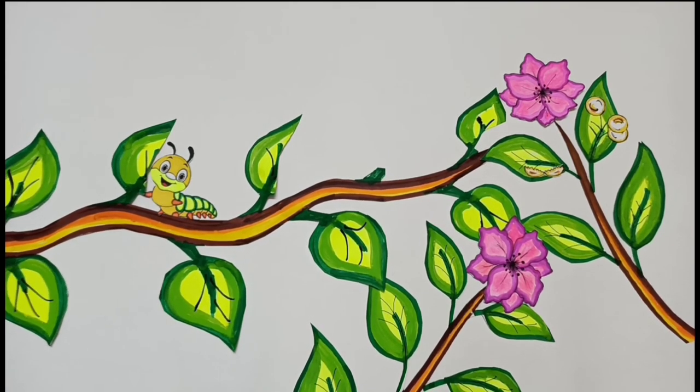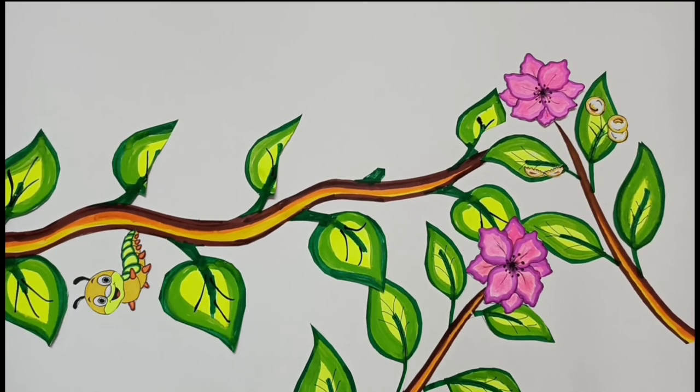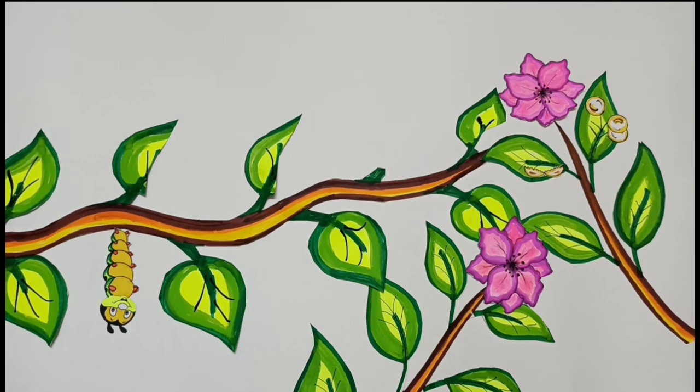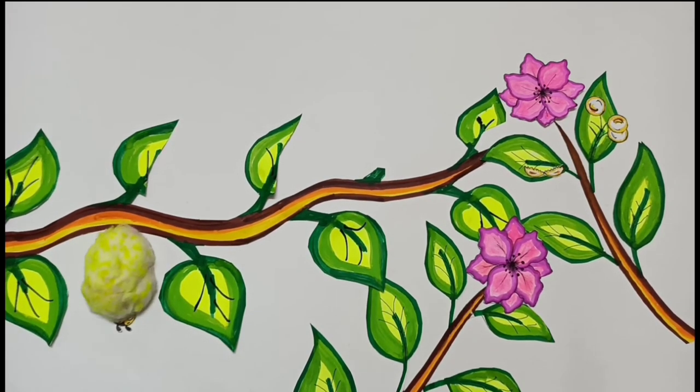Once the caterpillar is big enough, it stops eating. It then forms a protective layer around itself. In this state, the caterpillar is now called pupa.